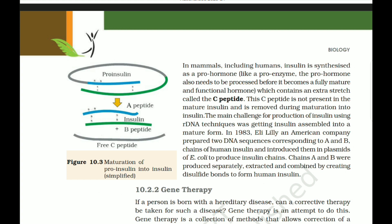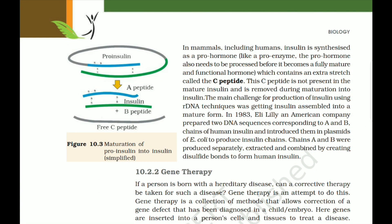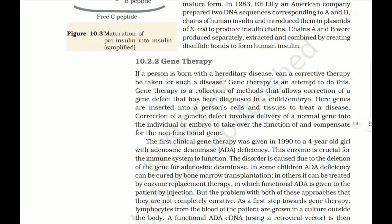Proinsulin contains an extra stretch called the C peptide, which is not present in the mature insulin and is removed during maturation. The main challenge for production of insulin using rDNA techniques was getting insulin assembled into a mature form. In 1983, Eli Lilly, an American company, prepared two DNA sequences corresponding to the A and B chains of human insulin and introduced them into plasmids of E. coli to produce the insulin chains. Chains A and B were produced separately, extracted, and combined by creating disulfide bonds to form human insulin.